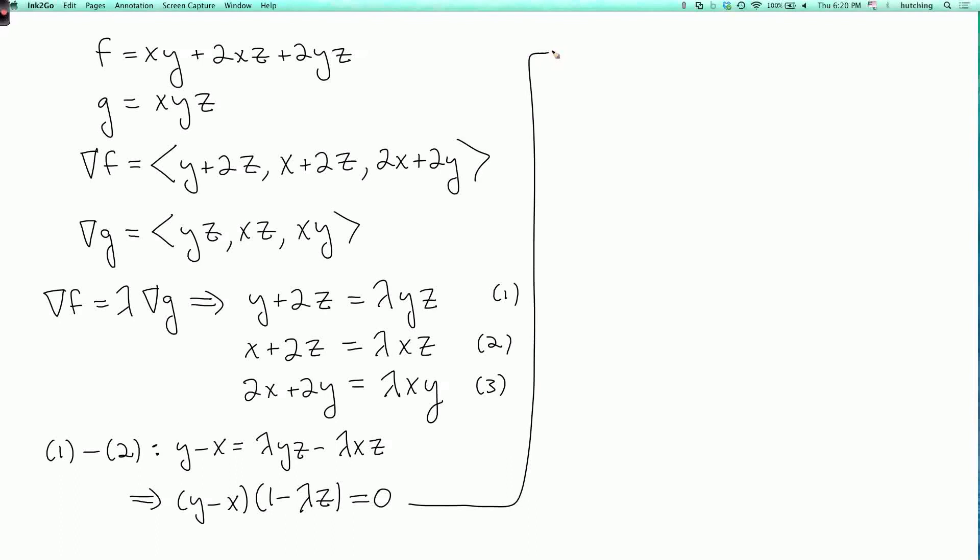So that implies that x equals y or lambda z equals 1. So we have to consider both of these cases. Now if lambda z equals 1, then we have a problem. Because now equation two says x plus 2z equals x. In other words, z equals 0. So if lambda z equals 1, then equation two implies that z equals 0. So that's impossible. First, because we're constraining x, y, and z to be positive. And also because this equation does not allow for z to be 0. So either way, that's impossible. So we've ruled out the possibility where lambda z equals 1. And we know that x equals y.